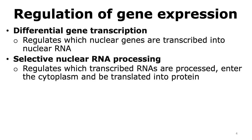Another way of regulating gene expression is selective nuclear RNA processing. In this process, it is regulated which of the transcribed RNAs are able to enter into the cytoplasm and become messenger RNAs. It should be noted that in eukaryotic cells, transcription occurs in the nucleus. However, the RNA that is transcribed has to be transported to the cytoplasm in order for it to be translated into a protein.